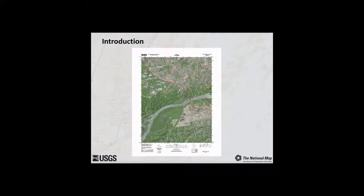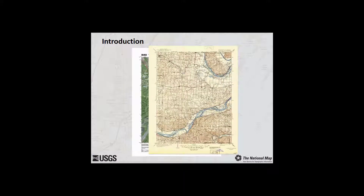Everybody has their favorite place to download a USGS topographic quadrangle. However, are you positive that you are getting the most current map? The USGS maintains the most up-to-date version of each and every topographic quadrangle. Did you also know that you can access more than 178,000 historical topographic maps of the United States through the store? The historical topographic map collection contains all of the topographic maps published by the USGS since the inception of the topographic mapping program in 1884.